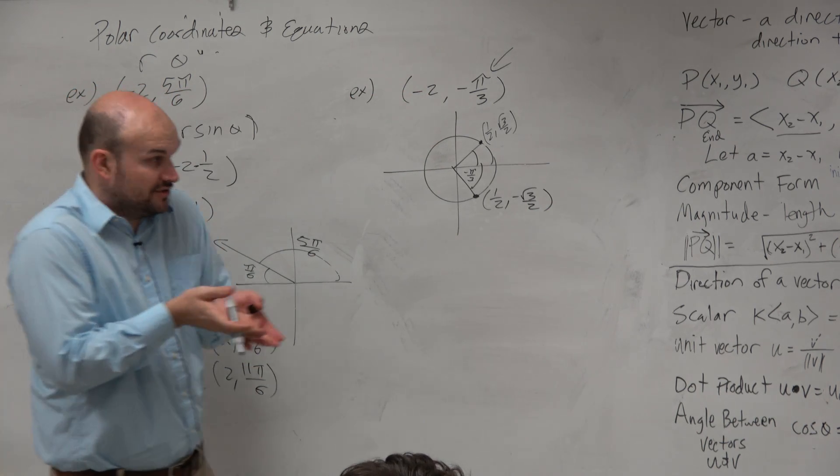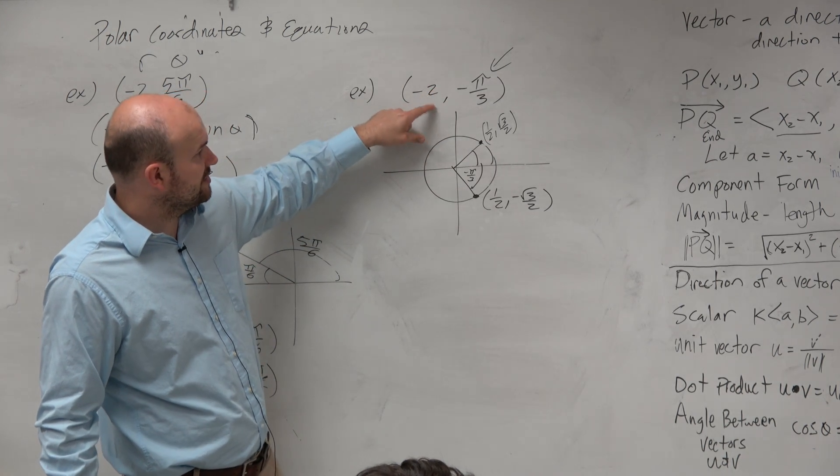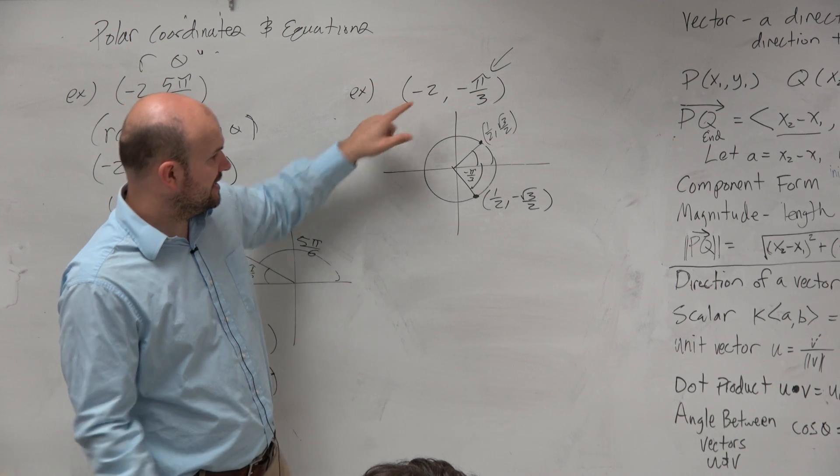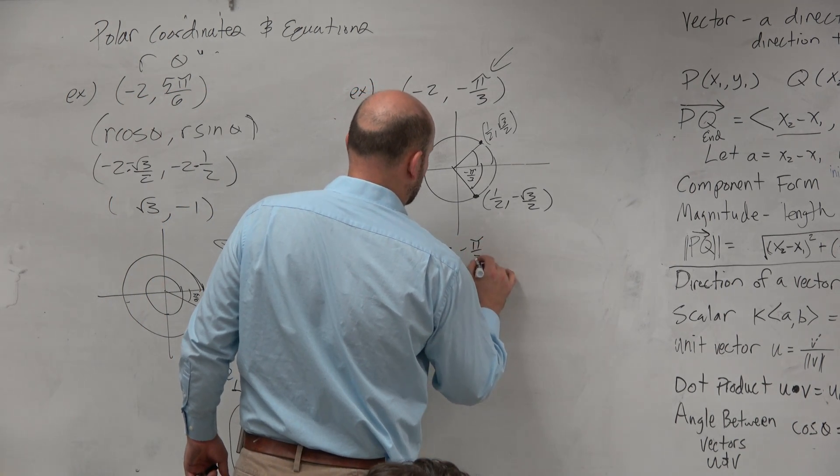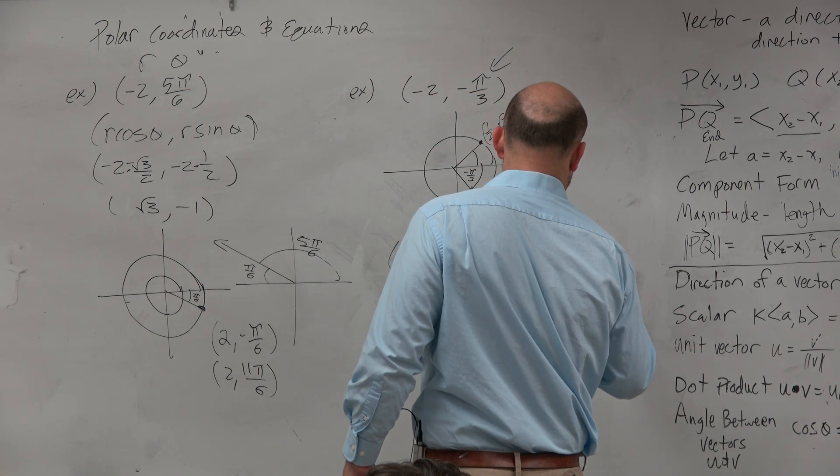Now, what I told you guys to do, and you don't have to do it this way if you start noticing patterns and want to do it quicker, that's fine. But if I want to convert this point to rectangular form, all I'm really doing is taking negative 2 times the cosine of negative pi over 3 comma negative 2 times the sine of negative pi over 3.